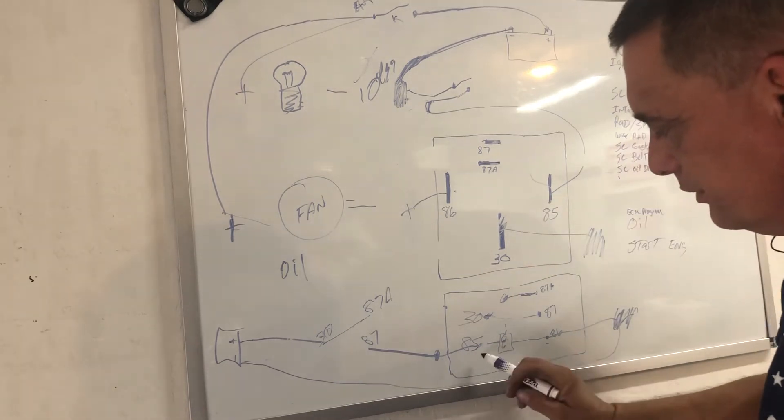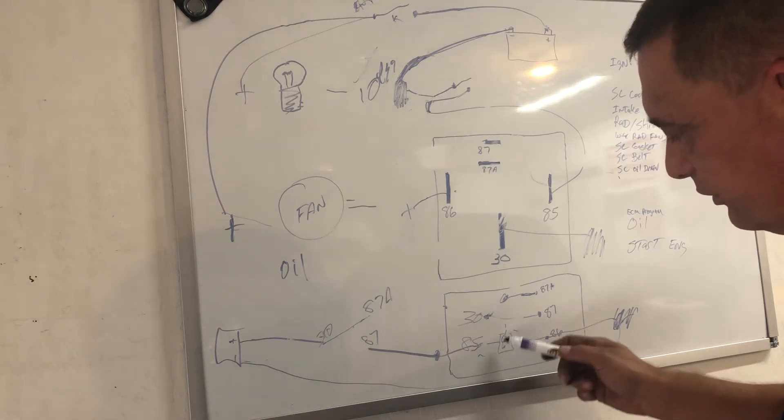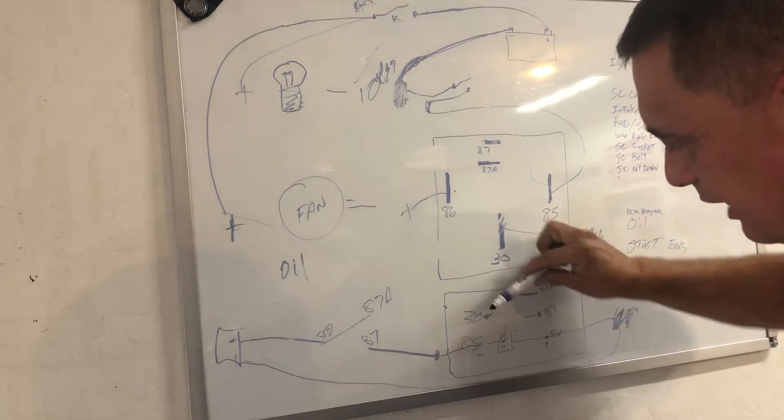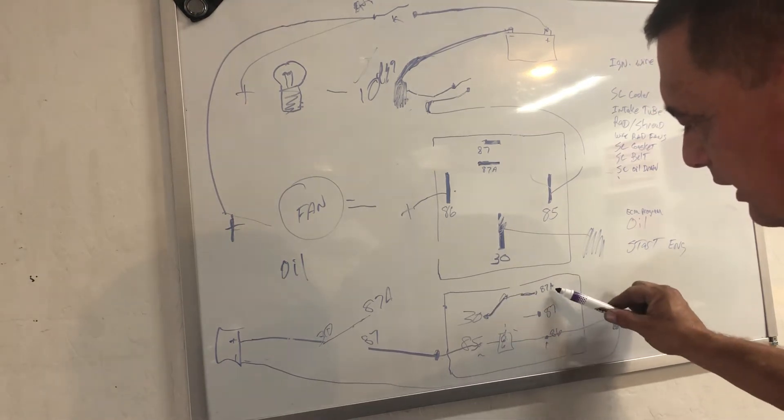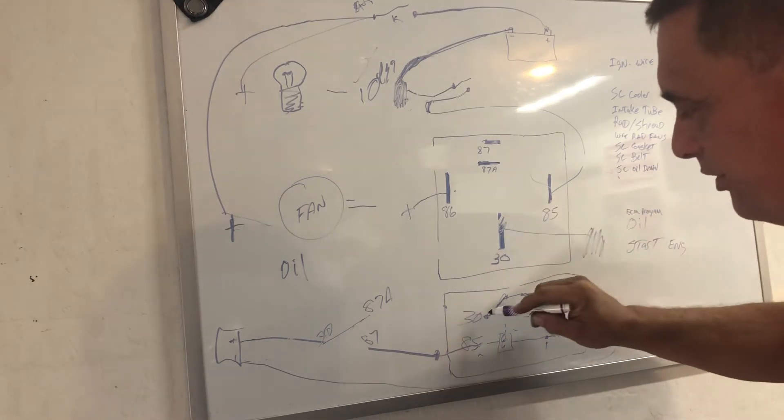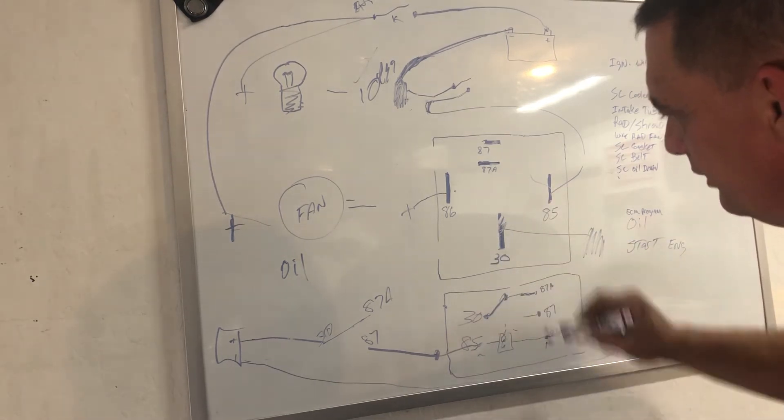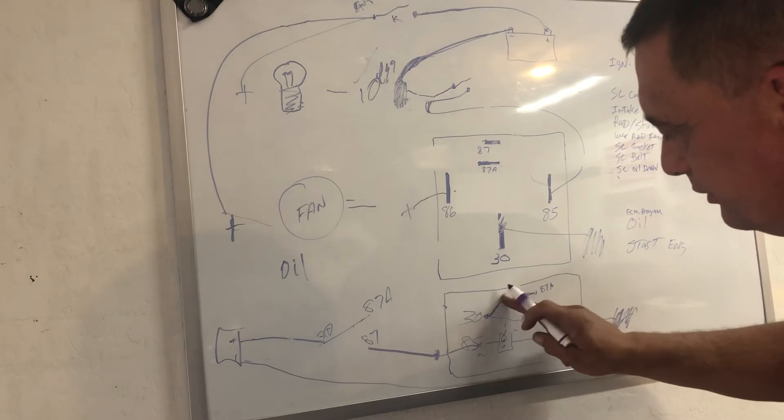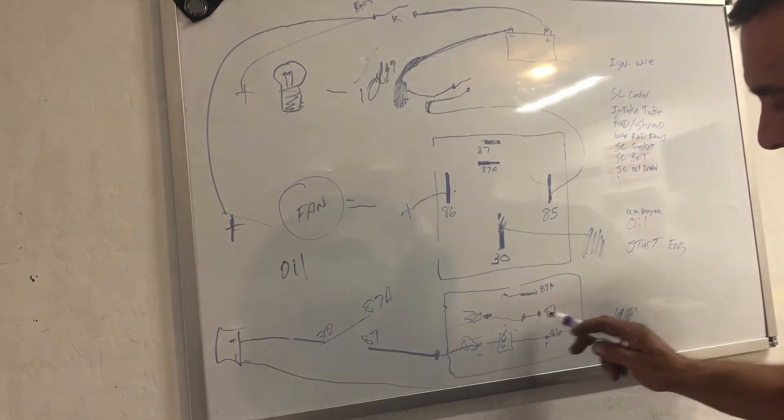On your relay that controls this little low amperage solenoid which pulls this gate back and forth between 87A and 87. Okay, so that would be up here. 30 is one side of the gate and it's either going to close with 87A right there or it's going to be pulled down when this powers up. It will be pulled down to 87 here. So it's either going to flow to 87A or it's going to flow to 87.